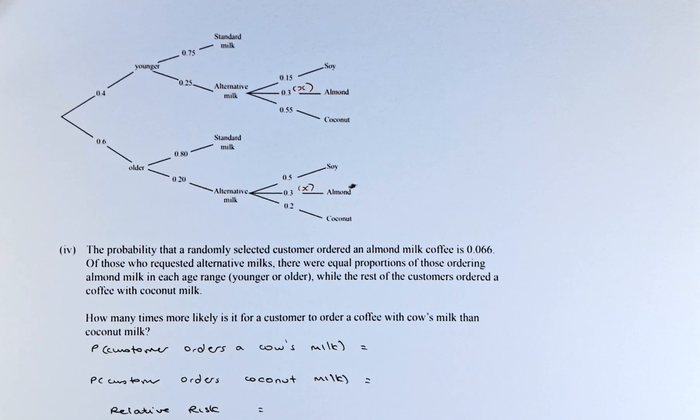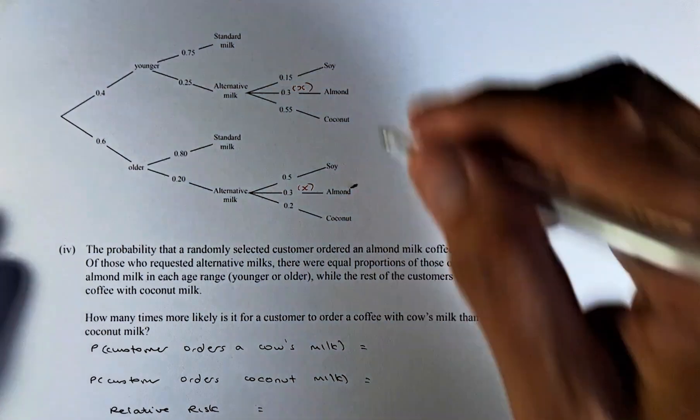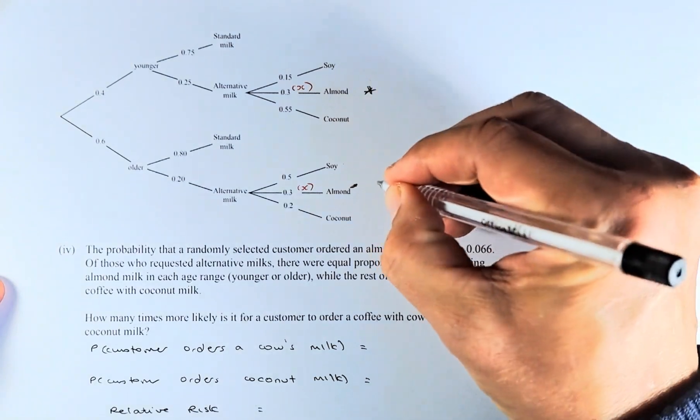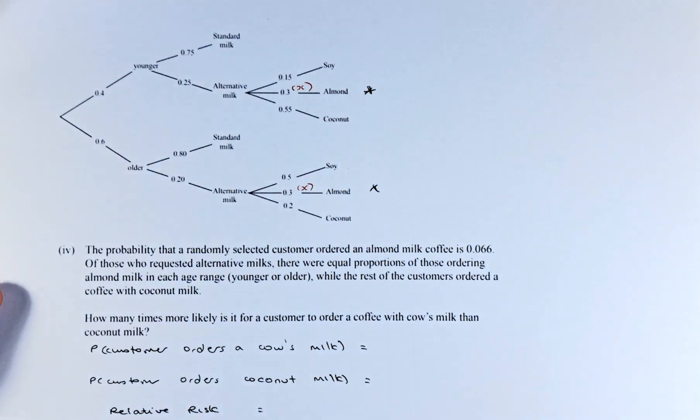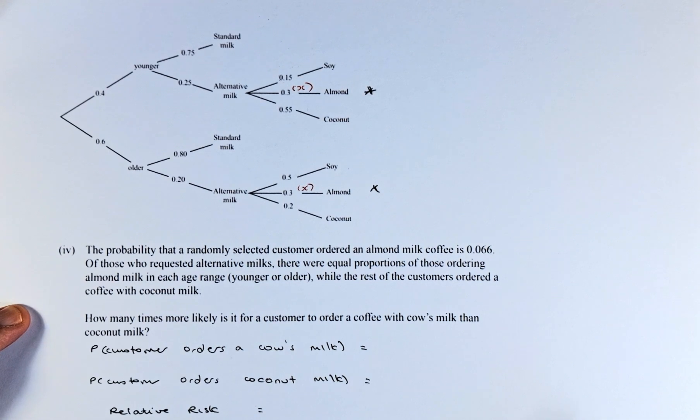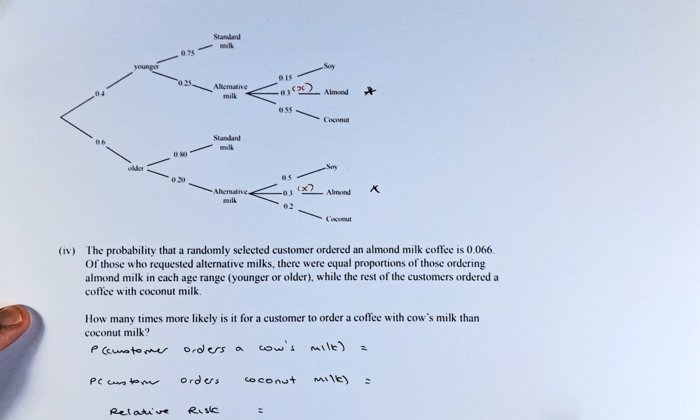The probability that a randomly selected customer ordered an almond milk is 0.66. So almond milk is here or here. So the probability is 0.66. Of those who requested alternative milks, there were equal proportions of those ordering almond milk in each age range while the rest of the customers ordered